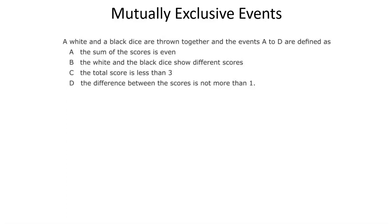Hello, and this time I'm talking about mutually exclusive events. This is a bit of a tricky one because it's like a double negative, so I always have to stop and think about it. It's when being one event, or one property of an event, excludes the other thing from happening.